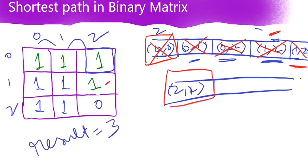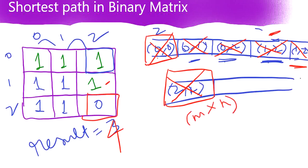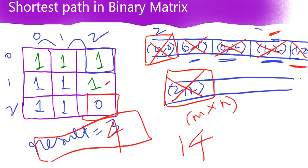Finally we have only 2,2. We pop it from the queue and update result plus 1, giving us 4 — we reached the fourth level. Now 2,2 is our last cell; this is where the matrix ends. Since 2,2 is the last row and column of the given matrix, we have reached our destination, and here we return our result. So 4 is the answer for this problem.